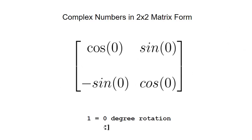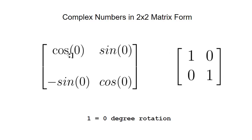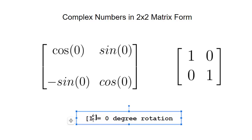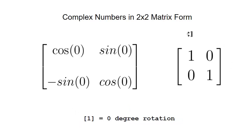Similarly, if you set the degrees to 0 in this 2x2 matrix, the cosine of 0 is 1 and the sine of 0 is 0, so you end up with the identity matrix — what I call the '1 matrix.' This matrix corresponds to the 2-dimensional numerical value of 1.